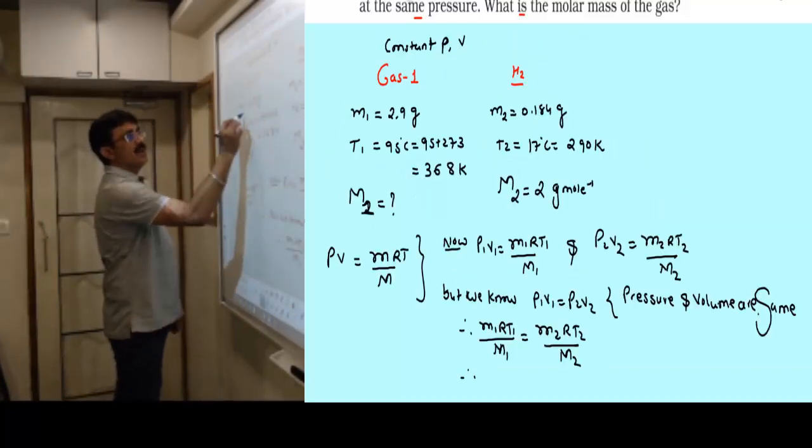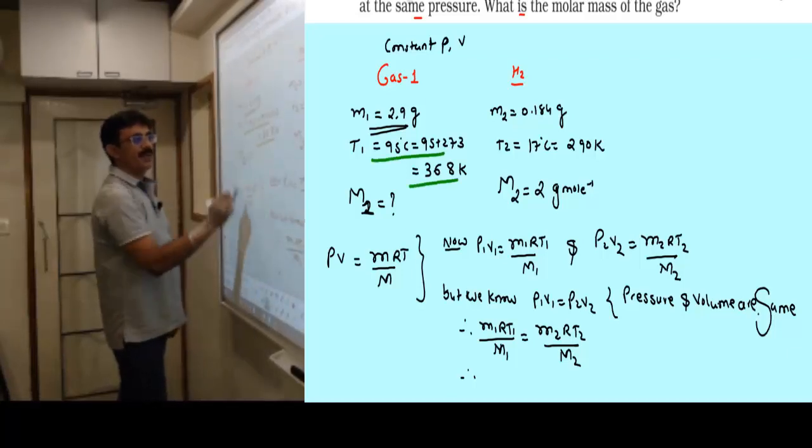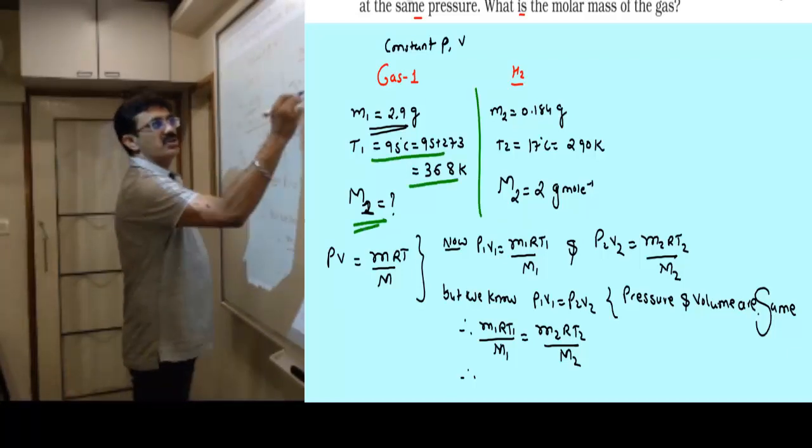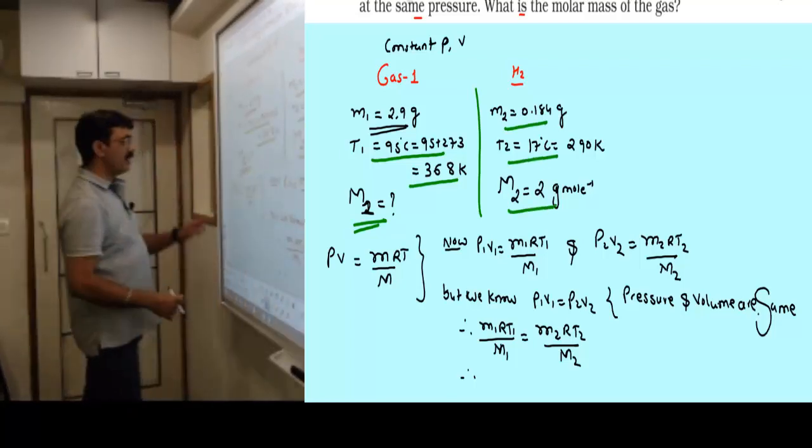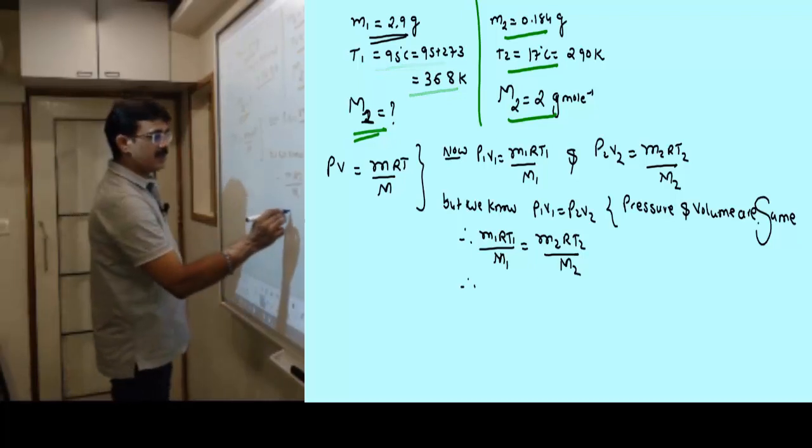So p1 v1 equals p2 v2 means m1 rt1 upon M1 equals small m2 rt2 upon M2. We have mass of gas one, which is 2.9, t1 is known, M1 we need to find. Mass m2 is known, t2 is known, capital M2 is known. Let's substitute.